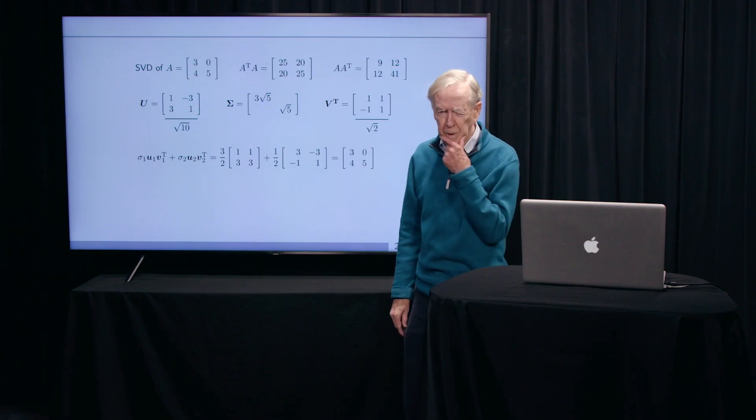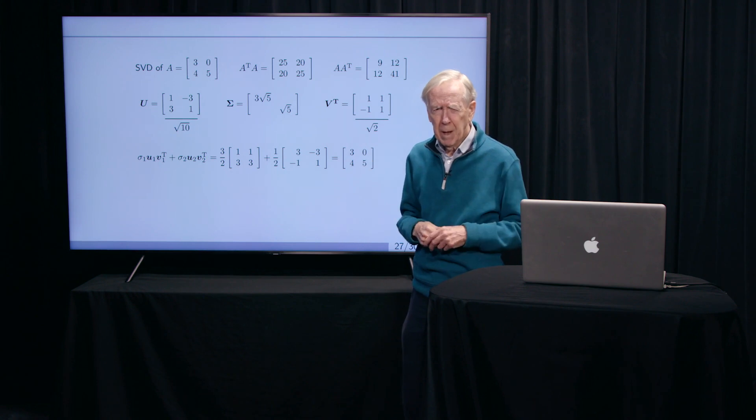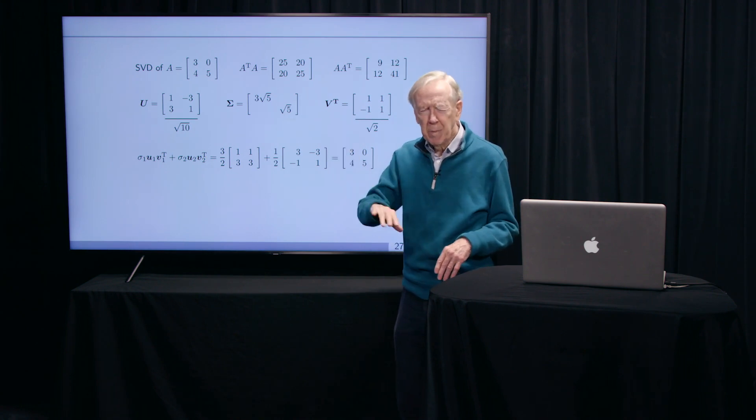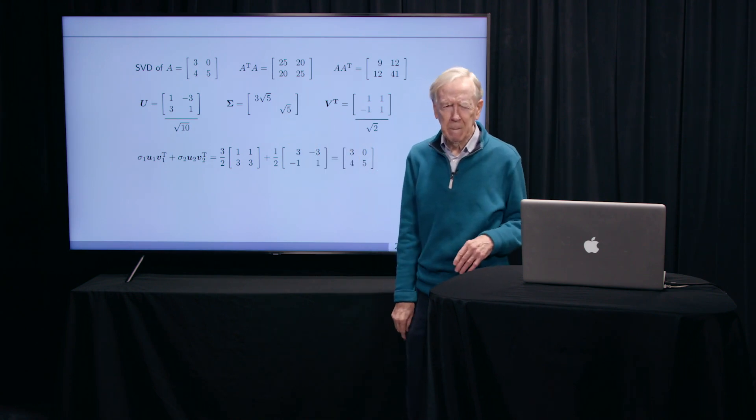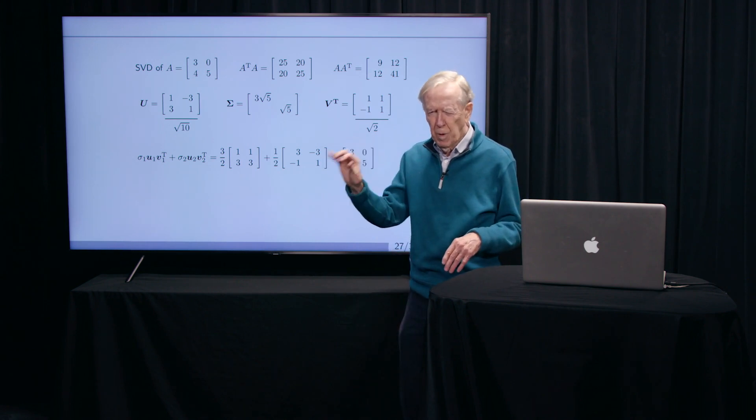So if I had 100 by 100 matrix or 100 by 1,000, I'd have 100 singular values. And maybe the first five I'd keep. If I'm in the financial market, those first numbers are telling me maybe what bond prices are going to do over time.